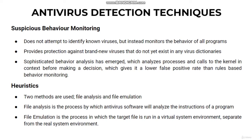The second heuristic approach is file emulation. The target file is run in a virtual machine environment separate from the real system environment. The antivirus software then logs what actions the file takes in the virtual environment. If the actions are found to be damaging, the file will be marked as a virus. However, this method can also trigger false alarms, as it depends on the antivirus developer's criteria for deciding whether something is a virus or not.